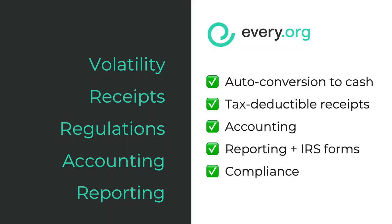This simplifies the legal, accounting, and operational burdens for your organization. So those considerations I covered — volatility, receipts, regulations, accounting, reporting — every.org handles all of those by auto-converting to cash the moment the crypto donation is made, automating the tax-deductible receipts, doing the accounting and reporting, IRS form filing, and handling compliance.